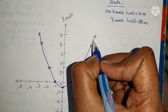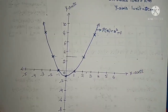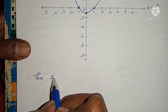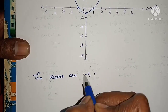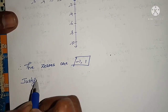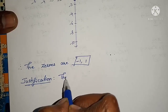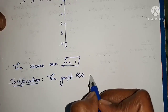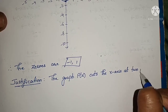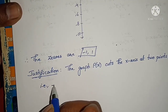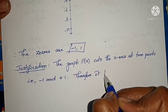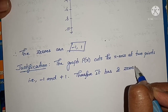This is the graph of p(x) = x² minus 1. The graph cuts the x-axis at 2 points: minus 1 and 1. Therefore, the zeros are minus 1 and 1. This matches what we found through factorization. Justification: the graph p(x) cuts the x-axis at 2 points, that is minus 1 and plus 1. Therefore, it has 2 zeros.